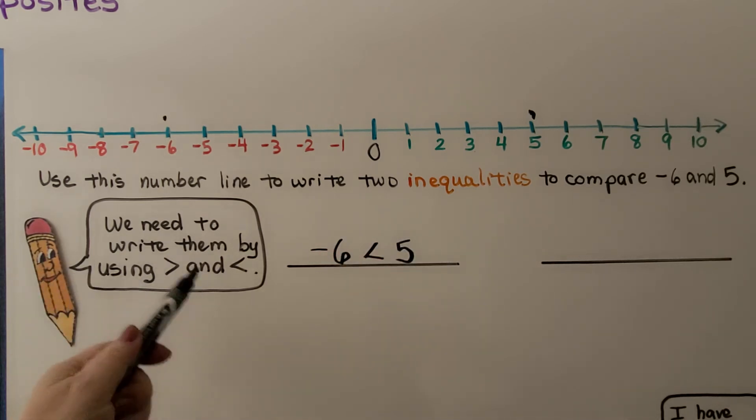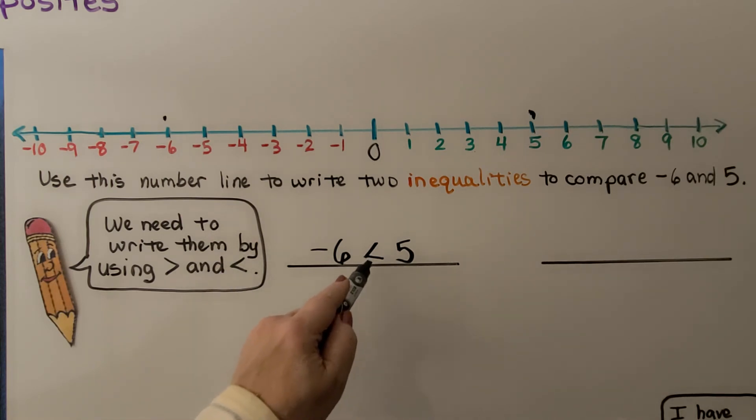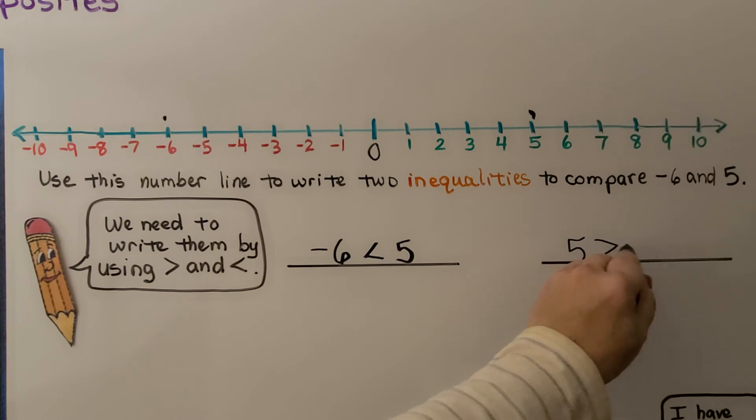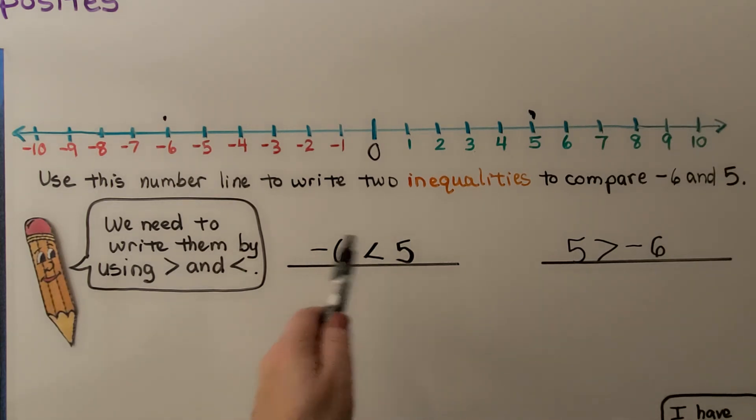We need to write another one. So we need to use the greater than and less than symbol. We need to use a greater than symbol. If negative 6 is less than 5, then we can switch it around and say 5 is greater than negative 6. And we've written two inequalities to compare negative 6 and 5. When we wrote it like this, we flipped the sign around and switched places with the numbers to write the second one.